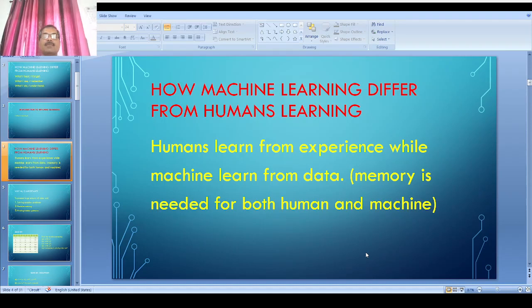Only if we remember the mistakes we have done in the past can we learn from them. Memory is needed for human beings, and only if there is memory can we learn. Similarly, machines need memory to learn from data.